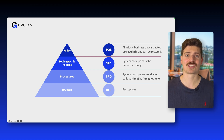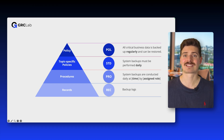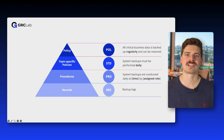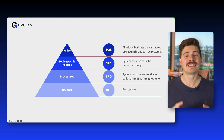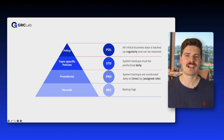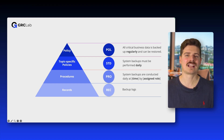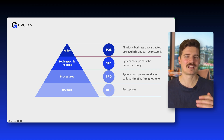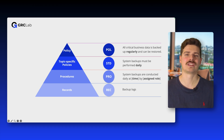Not all organizations follow this naming scheme. You might find countless different names for these documents, such as guidelines, directives, work instructions, or even level 2 policies. So the specific terminology may vary between organizations, but the underlying structure and concepts are typically the same. Some organizations tend to mix them together, so you might have a policy that outlines the direction but also details step-by-step instructions. While that's not best practice, you might find that out there in the wild.